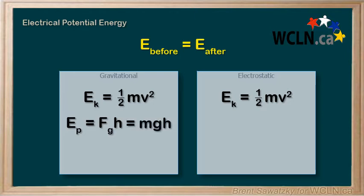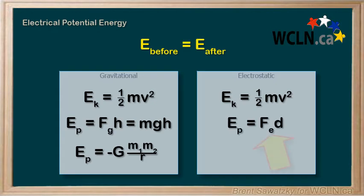But we also looked at potential energy far away from the surface of the earth and discovered G m1 m2 over r. That was great for planets and satellites. So switching to electrostatics, we'd switch to Ep equals Fe times displacement, or the electrostatic force.